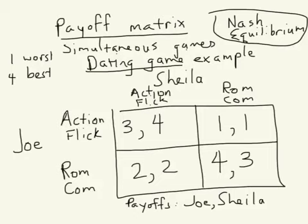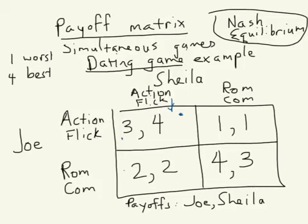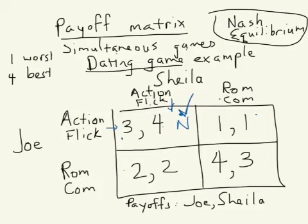Let's analyze the game cell by cell. In the first cell, Sheila and Joe have both gone to the action flick. Given that Sheila has gone to the action flick, would Joe like to change to the rom-com? His payoff is 3; if he switches, it falls to 2 — so he's happy where he is. Given that Joe is at the action flick, would Sheila prefer the rom-com? Her payoff is 4; if she switches, it falls to 1. Neither player has an incentive to change, so this is a Nash equilibrium. In the next cell — Joe at the action flick, Sheila at the rom-com — given Joe is at the action flick, Sheila's payoff would go from 1 to 4 if she switched. So this is not a Nash equilibrium.